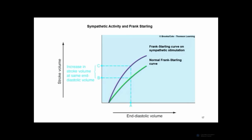By simply increasing end-diastolic volume you will increase contractility and stroke volume. But under most circumstances where we need to increase cardiac output, it is done through increased sympathetic stimulation to the heart, which increases both heart rate and cardiac contractility — even greater than what normally happens with increased end-diastolic volume alone.